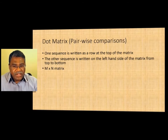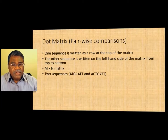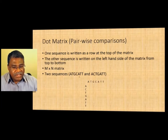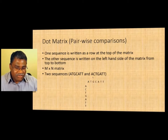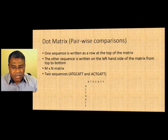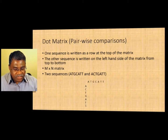In a dot matrix, you write one sequence across the top of the matrix from left to right, and the other from top to bottom. The two sequences we'll deal with are ATGCATT and ACTGATT. It's an M by N matrix, so the number of rows can be different from the number of columns. Rows are always written first, columns second. In this case it's a 7 by 7 matrix, but it doesn't have to be.